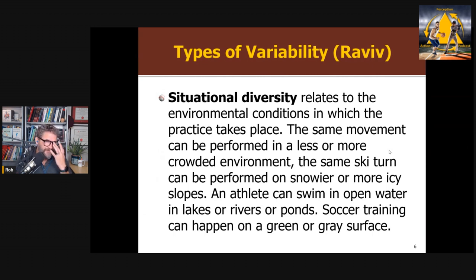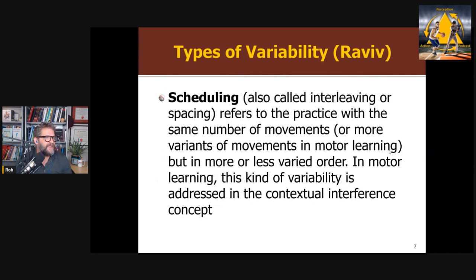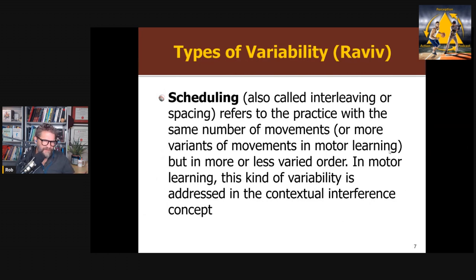An important concept they touch on is that some conditions are task relevant and some aren't. Whether you're playing on a green or gray surface has no relevance unless it affects ball visibility. Finally, scheduling refers to the spacing or interleaving of practice — this is actually what the bulk of variability of practice research is really about. Are we doing block practice, serial practice, or random practice? This is where contextual interference comes in, which I reviewed a couple of episodes ago.